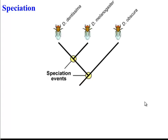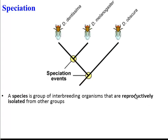Let's start by defining what a species is and what speciation means. A species is a group of organisms that can reproduce with each other but can't reproduce with another group. In other words, they're reproductively isolated.